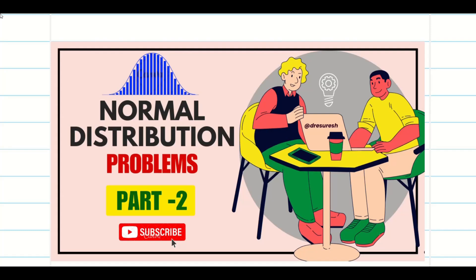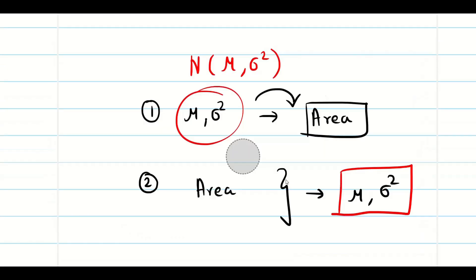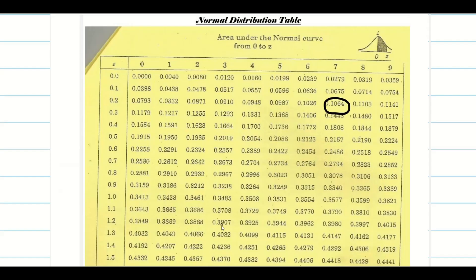Dear friends, welcome to problem solving session 2 on normal distribution. In the previous session 1, we solved problems when mean and variance are given to find the area or probability. In today's session, two pieces of information regarding the area or probability are given, and we use the normal distribution table to find mu and sigma, using the relation z = (x - mu) / sigma.